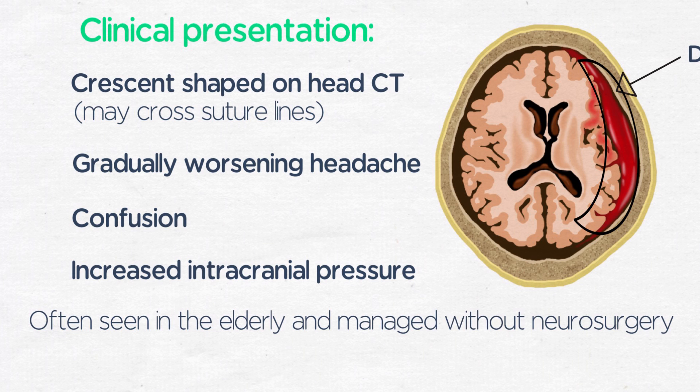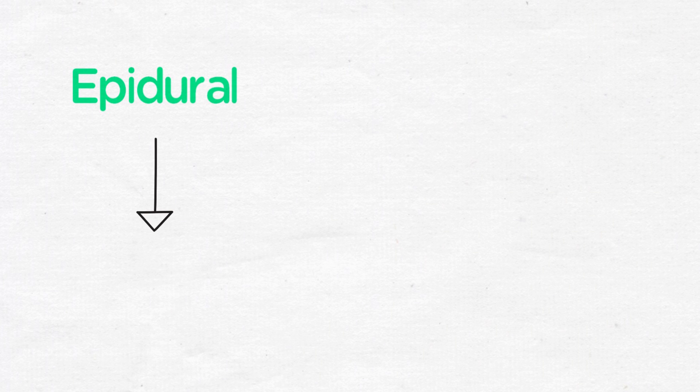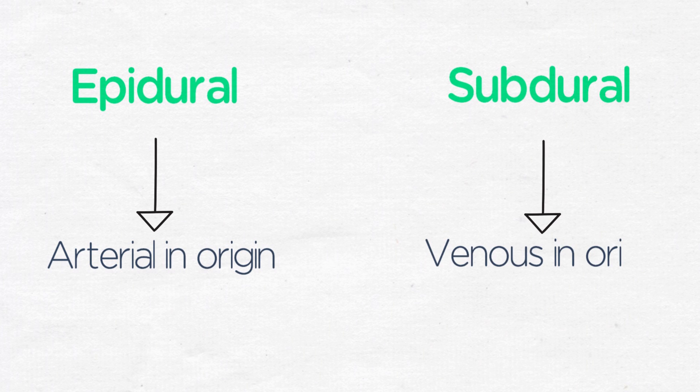An important point is that epidural hematomas are arterial in origin, and that subdural hematomas are venous in origin.